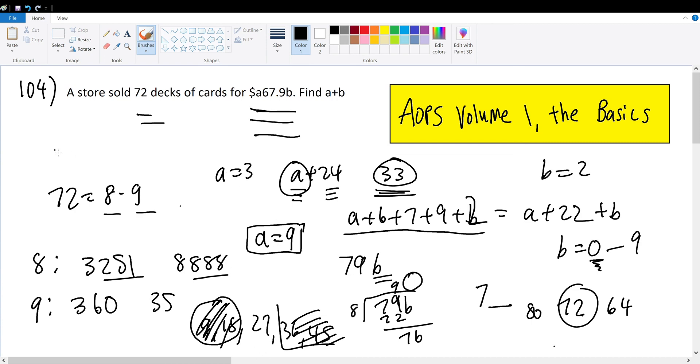Hence, the sum of A and B will be A plus B, which equals 3 plus 2, which equals 5. Meaning the sum of A and B will be 5, and the price of the 72 decks will be $367.92. But nonetheless, the solution is fine.